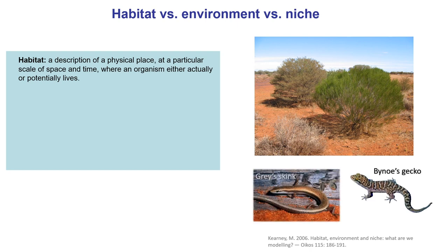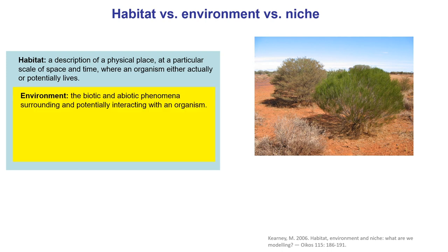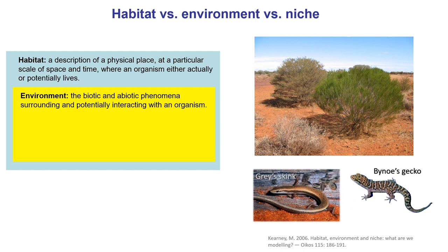Then there's environment. The word environment means 'that which surrounds,' so something has to be surrounded — and of course, that is the organism. The environment is the biotic and abiotic phenomena that are surrounding and potentially interacting with an organism. With these two lizard examples — the diurnal grey skink and the nocturnal binose gecko — organisms in the same habitat can experience completely different environments. The grey skink experiences solar radiation because it comes out during the day and experiences very high temperatures, whereas the binose gecko hides underground during the day and never really sees the sun.